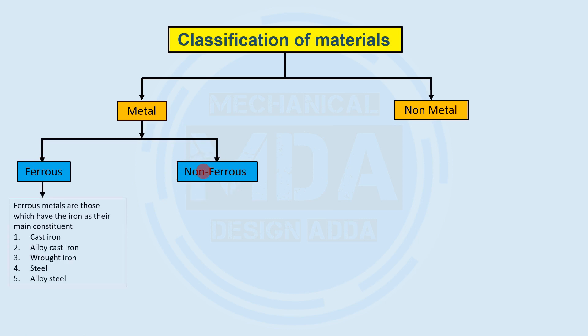Ferrous materials are those materials which contain iron as their main constituent. So in ferrous materials, iron is the main component. You can see cast iron, alloy cast iron, wrought iron, steel, and alloy steel — these are the ferrous materials.